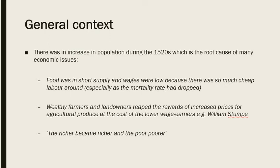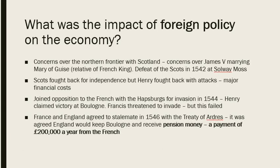Foreign policy is a big part of Henry's reign — he's always aiming for glory against the French, the Scots, or the Habsburgs. In the latter half of his reign he becomes concerned again about the border with Scotland. Henry successfully defeats Scotland in 1542. What triggered this concern was that James V had married Mary of Guise, a relative of the French king, and Henry worried the French and Scots would plot against him.